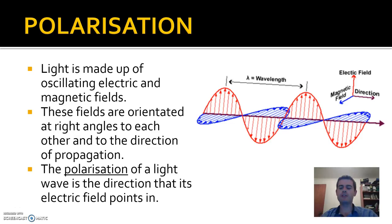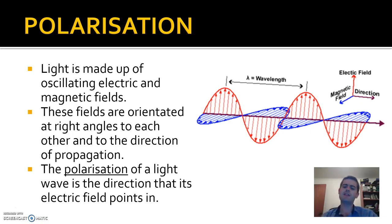We haven't touched on this yet, but basically when you look at what light is, light is actually made out of electric and magnetic fields. They're oscillating, going backwards and forwards. So light is made out of oscillating electric and magnetic fields, and if you could see these fields, you would see them orientated at right angles to each other, and also at right angles to the direction of propagation, which is the direction the light wave moves in.